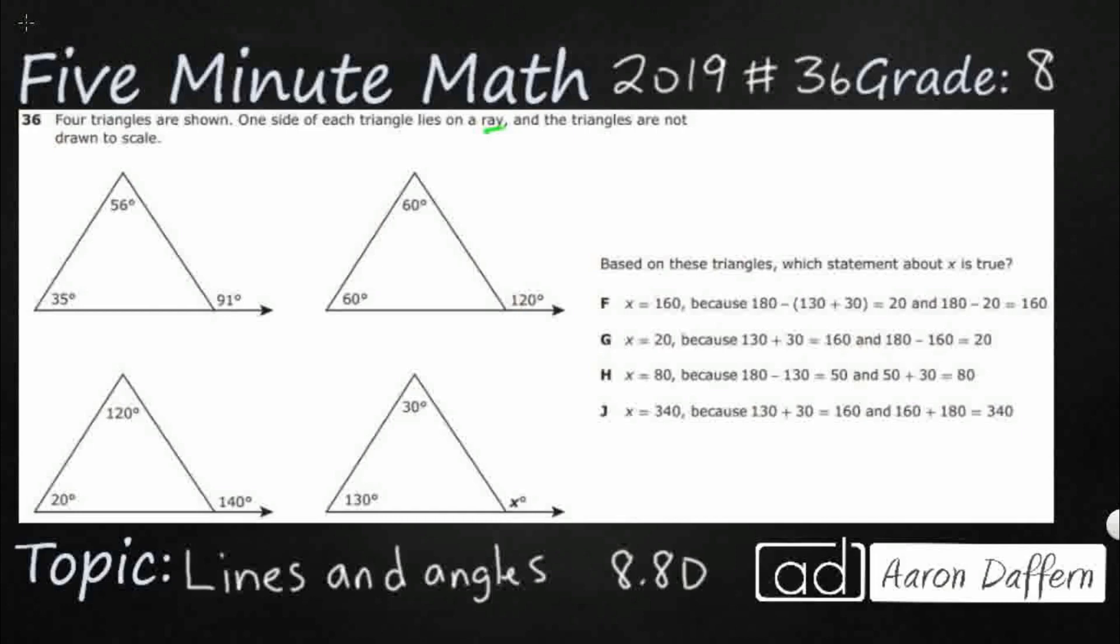So we just need to find x. This seems pretty simple, but you know what? We are kind of missing something. Take a look. We are missing this internal degree on all four of these triangles.